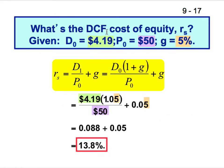For the discounted cash flow cost of equity: D0 (past dividend) is $4.19, current price is $50, and the growth rate of dividends is 5%. D1 = D0 × (1 + G) = 4.19 × 1.05. Working through the whole formula gives you 13.8%.